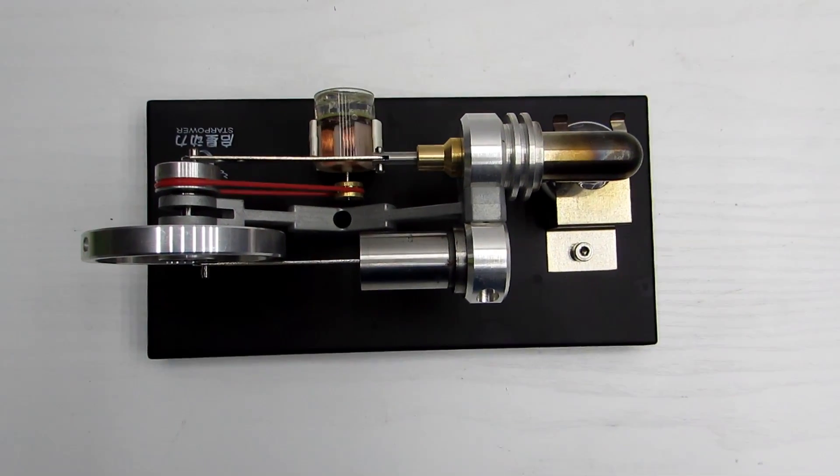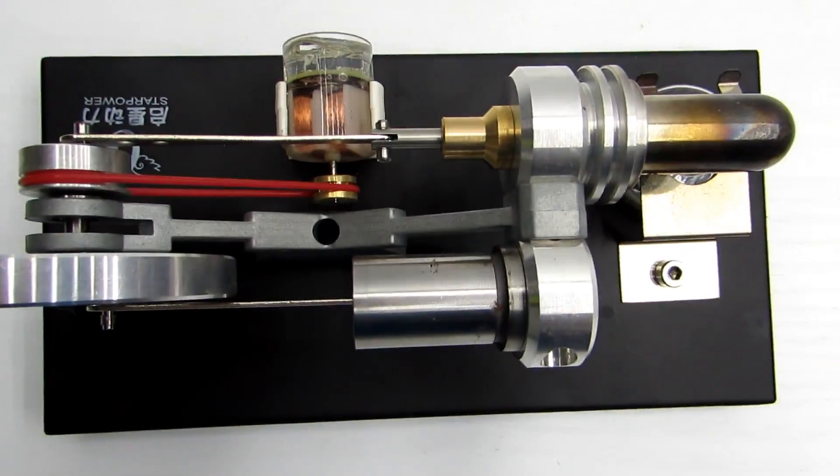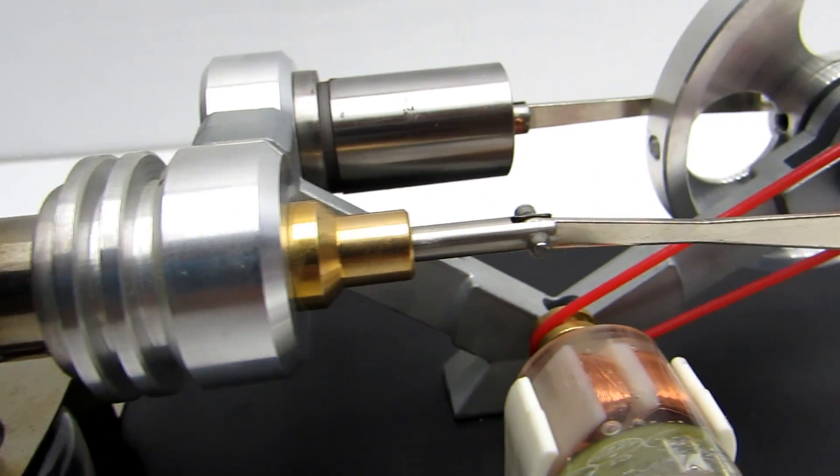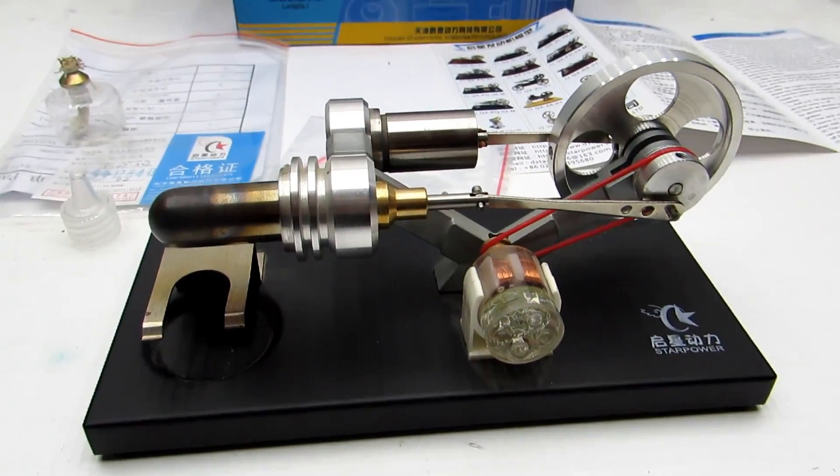There are a few types of Stirling engines. Mine is gamma type with 2 cylinders. The kit includes some spare parts, keys and alcohol stove.